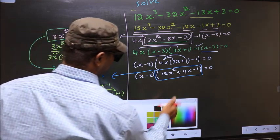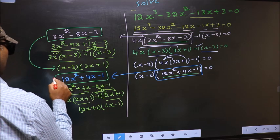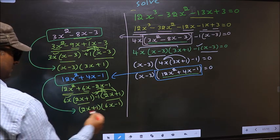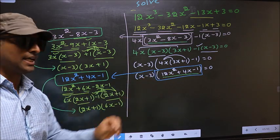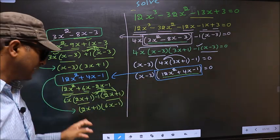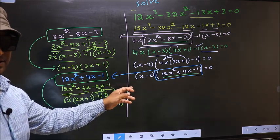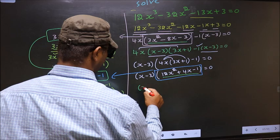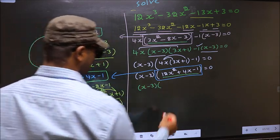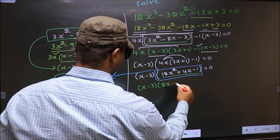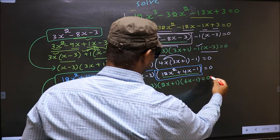In place of this quadratic 12x squared plus 4x minus 1, I will write (2x plus 1)(6x minus 1). So the equation changes to (x minus 3)(2x plus 1)(6x minus 1) equals 0.